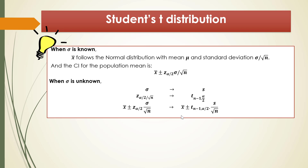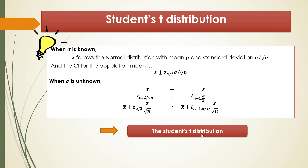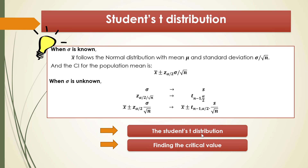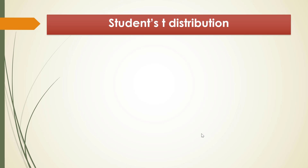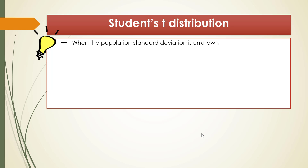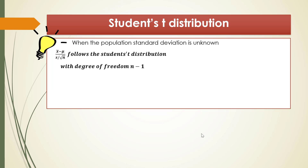To construct the confidence interval for the population mean when sigma is unknown, we need to investigate the student t distribution and find the critical value — those are the two main things to learn today. When the population standard deviation is unknown, x-bar minus mu over s over square root of n follows the student t distribution with degrees of freedom n minus 1.